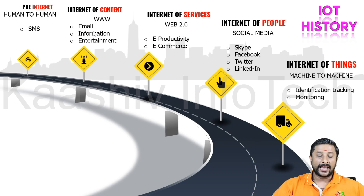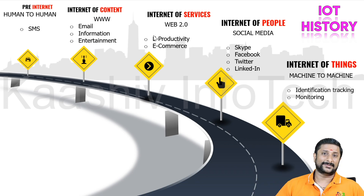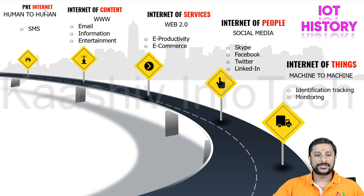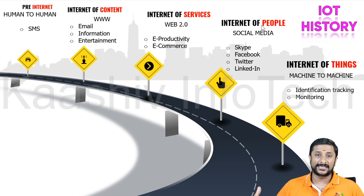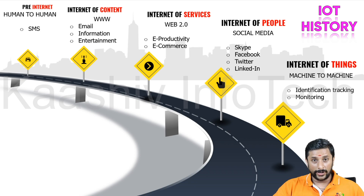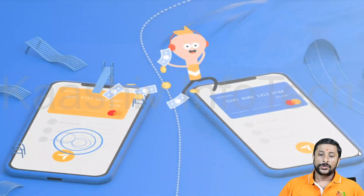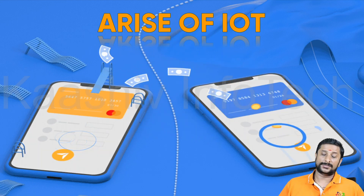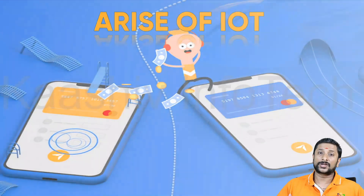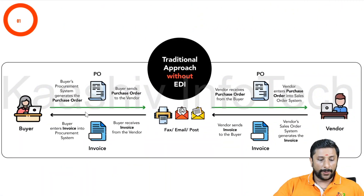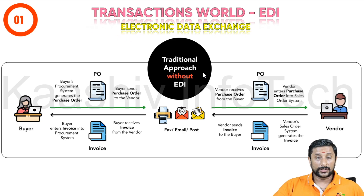People can communicate via the internet — email, entertainment, content. So we got the Internet of Content. From there, services came — buying online, e-commerce. Then came the Internet of People — social connecting via Facebook, Skype, Twitter, LinkedIn. So pre-internet gave us Internet of Content, then Internet of Services, then Internet of People. From there, connecting the things came — Internet of Things, where machines are connected to machines for monitoring and controlling.